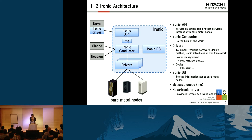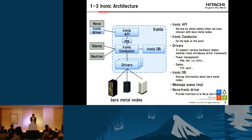This is a simple Ironic architecture. Ironic consists of six parts: Ironic API, Message Queue, Ironic Conductor, Database, Drivers, and Nova Ironic Driver.